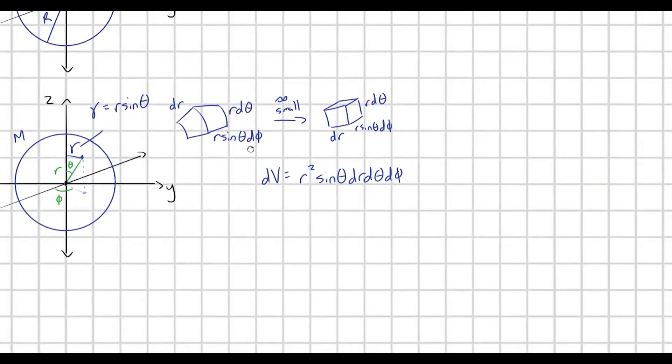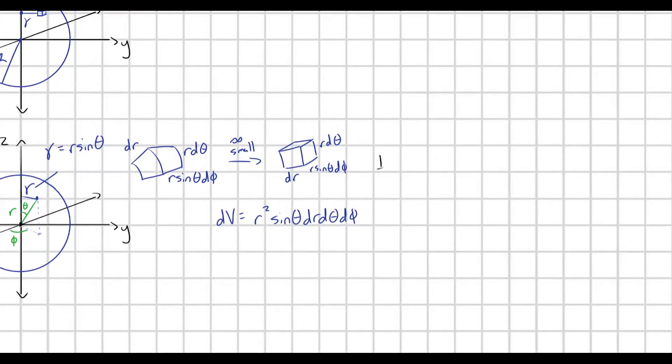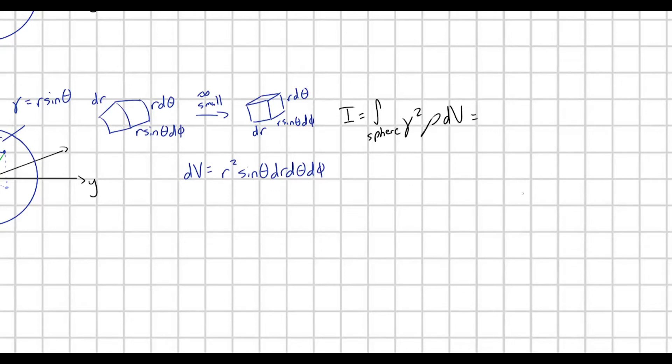Okay, awesome. So, let's go ahead and start making some substitutions. So, from up above, we had that I was equal to integral over my sphere of gamma squared times rho times dV. And so, this is just going to be equal to the integral, I'll still say over sphere for now, of r to the fourth. When we plug all of this in, this is going to be r to the fourth, sine cubed theta, times rho, times dr, d theta, d phi. Feel free to pause the video. Make sure that when you plug everything in, that's the result that you get.